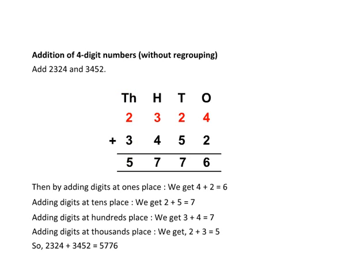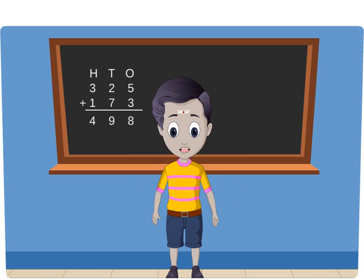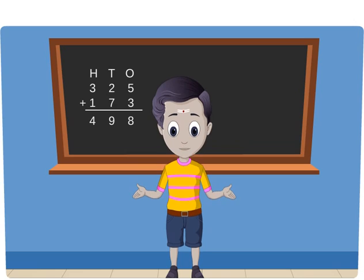So, 2324 plus 3452 is equal to 5776. Before learning addition with regrouping, let us understand the meaning of regrouping by an example.